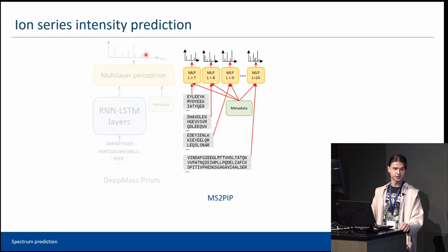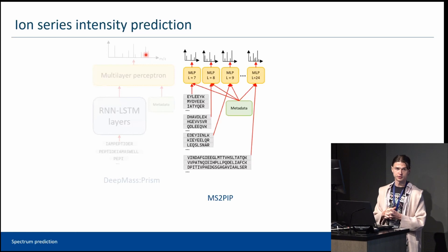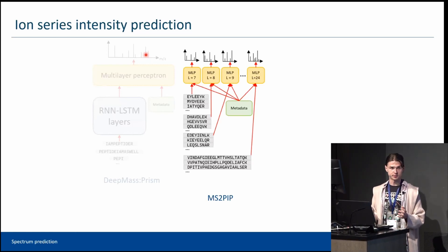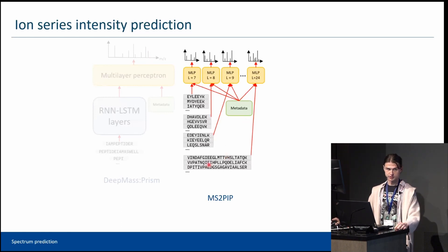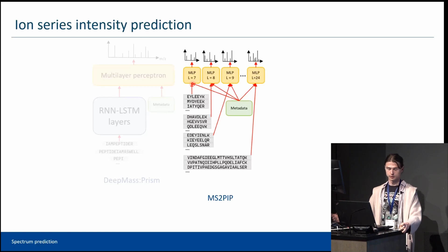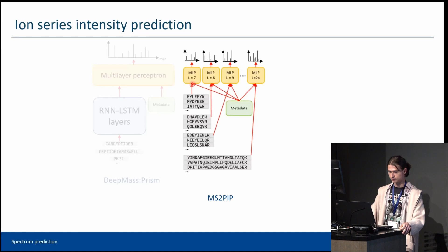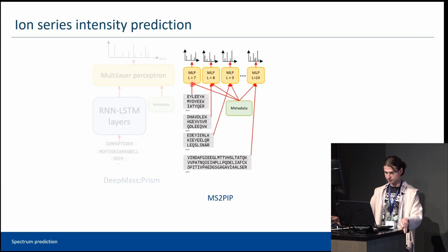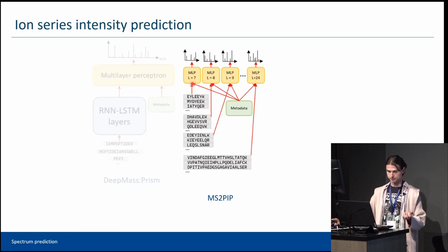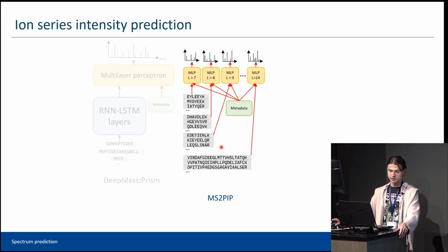We can also use conventional machine learning rather than deep learning for this task. However, the problem is that conventional machine learning cannot directly process data of variable shape — specifically, peptide sequences of variable length. One solution is to use several models, making a separate model for each peptide length. This approach is simple to implement but loses synergy from peptides of different lengths. This approach is implemented in MS2PIP, where they use XGBoost rather than multilayer perceptron to predict intensities.